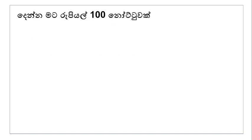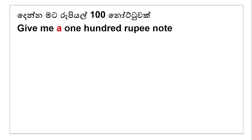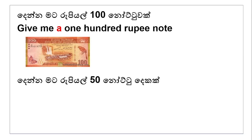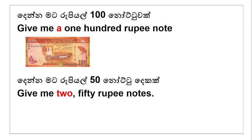Denna maat rupee al siye noot tuva — give me. Denna kiyane give me. Give me ekak in da — rupee al siye noot tu ekak na ilna ni, give me a one hundred rupee note. Give me a one hundred rupee note. Denna maat rupee al panahai noot tu deka — give me two fifty rupee notes.